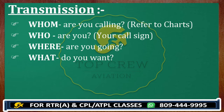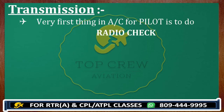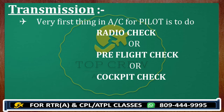Now we would learn about the very first thing a pilot does in an aircraft: the radio check. We also call it a pre-flight check or cockpit check. All three terms are the same, so do not get confused. Before proceeding further, we should know about the readability scale.